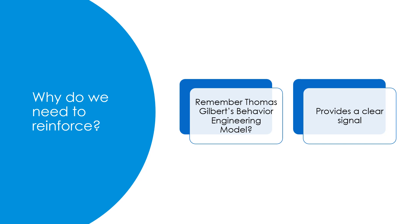Imagine someone puts you in a room and hands you several darts and tells you to hit the schlork. There are several items in the room, but you have no idea what a schlork is. You randomly throw a dart and it hits a blue item. The person turns to you and says, good job hitting the schlork, and hands you a Cheeto, which you happen to really like. You are much more likely to look at that blue item and hit it again, even if it's moved somewhere else in the room.